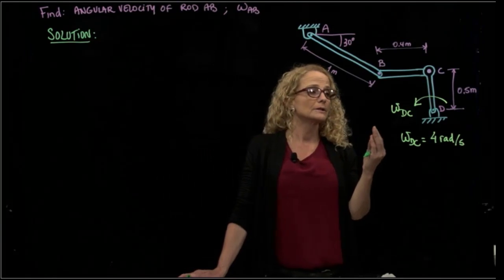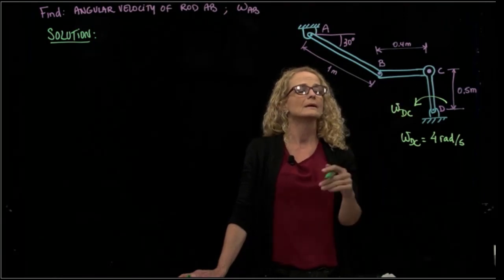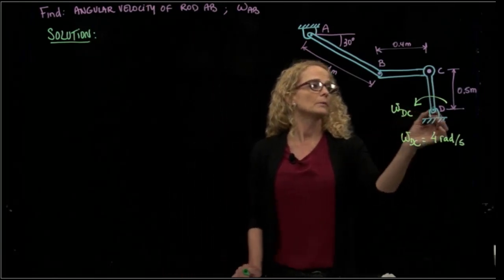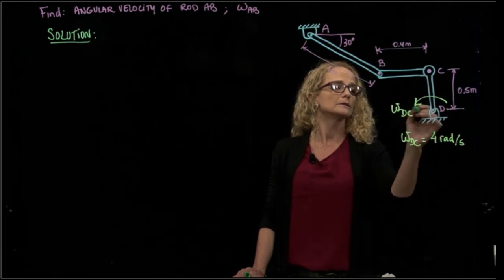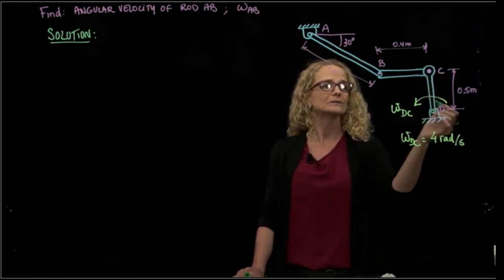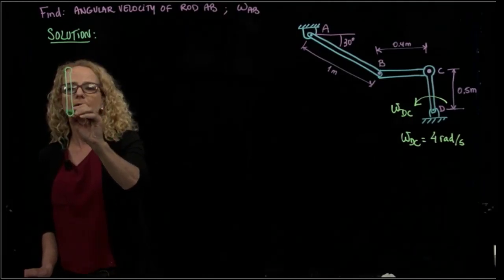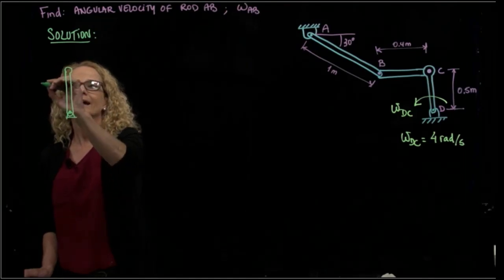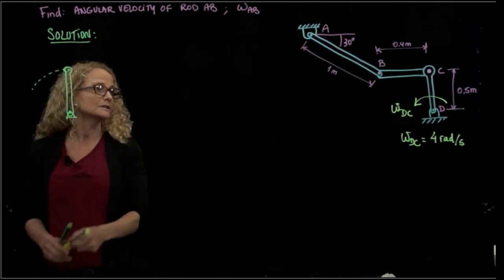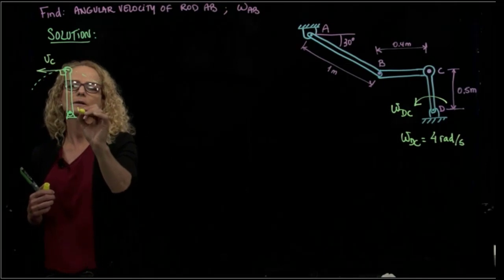When we talk about the instant center of rotation, it is very important to understand the path of motion of those pins. The velocity is always tangent to the trajectory or path. For rod DC, since D is a fixed point, point C moves along a circular trajectory, so the velocity of C will be tangent to that trajectory and perpendicular to that rod.